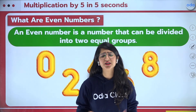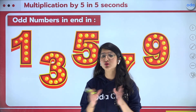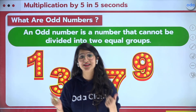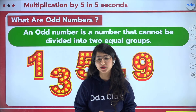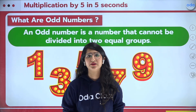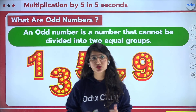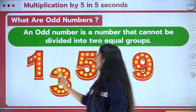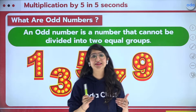Now what about odd numbers? Odd numbers are the numbers which cannot be divided equally — they do not come in the table of 2. Like if there is one chocolate, we would have to cut it in half. For me, these are the sad numbers. The odd numbers are 1, 3, 5, 7, and 9 — they do not come in the table of 2.